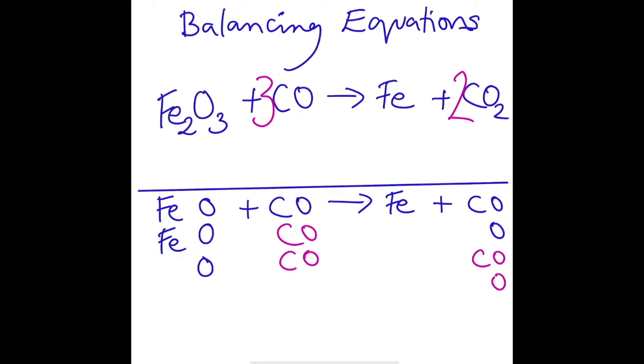Now we've got three carbons on one side and we've got two carbons on the other. So let's go back to our products and change that to three. We're adding in another carbon dioxide. Now we've got most of it balanced, but we've got two irons in our reactants and only one in our products.